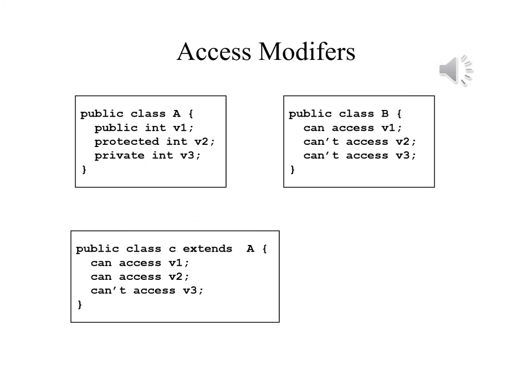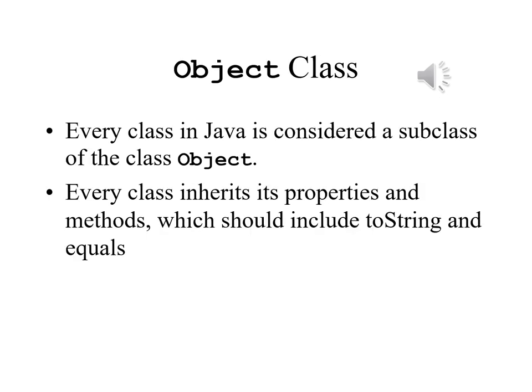C, on the other hand, is a derived class from A. It can access V1 because V1 is public, it can access V2 because it's protected and it is a derived class of A, but it can't access V3 because V3 is private. Object is a class in Java. Every class that exists in Java is either directly or indirectly derived from Object. Every class inherits its properties and methods, and this should include toString and equals. In most cases, this will mean writing and overriding toString and equals, as we saw earlier.